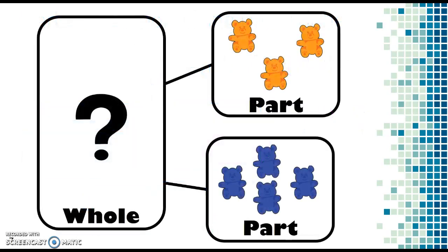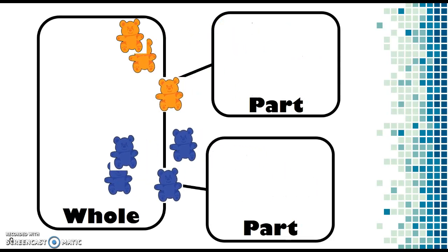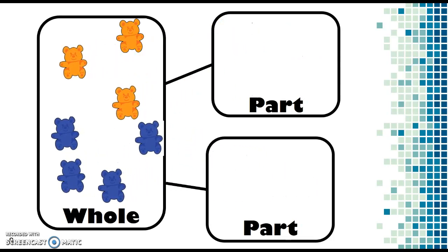Now let's look at this with a number bond. Here I have the teddy bear counters representing my two parts, part, part, and we are trying to discover what the whole is. So the bears will move from the two parts to represent the whole, which is 10.